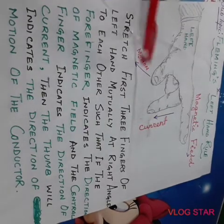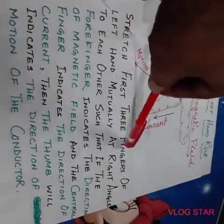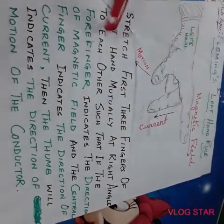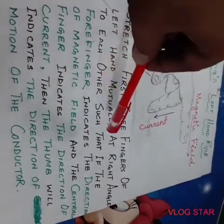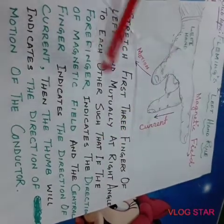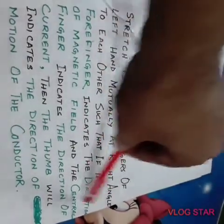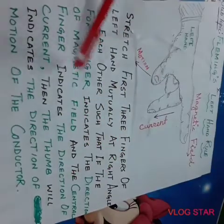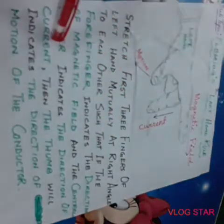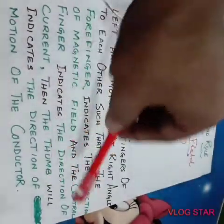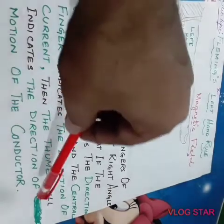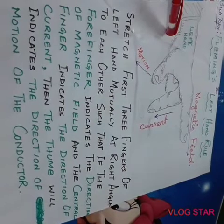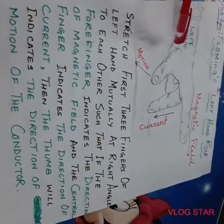Fleming's Left Hand Rule states that: stretch the first three fingers of the left hand mutually at right angles to each other such that the forefinger indicates the direction of the magnetic field and the central finger indicates the direction of current, then the thumb will indicate the direction of motion of the conductor.